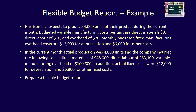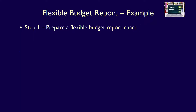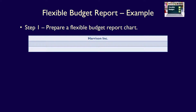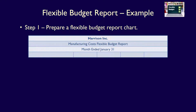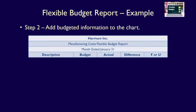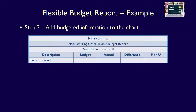Prepare a flexible budget report. Step 1 is to prepare the flexible budget report chart. We start with the company name — Harrison Inc. — the name of the report: Manufacturing Costs Flexible Budget Report, and the date: month ended January 31st. Then we add the necessary five columns with the headings: Description, Budget, Actual, Difference, and a column indicating if the difference is favorable, denoted with an F, or unfavorable, denoted with a U. Step 2 is to add all of the budgeted information, starting with the level of activity, which in this question is the units produced — the base we'll use to calculate total variable costs.